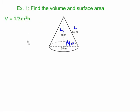So let's start by finding the volume. Volume is equal to one-third pi r squared times h. r is 14, h is 48, so I'm going to plug those in.